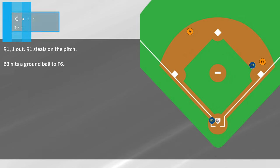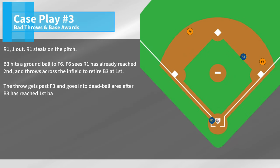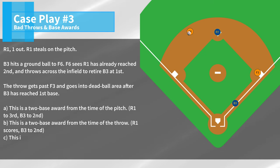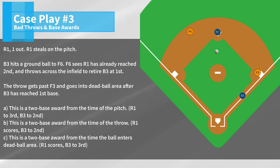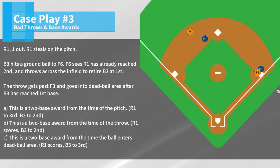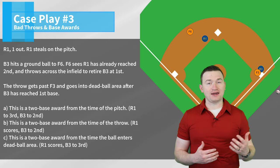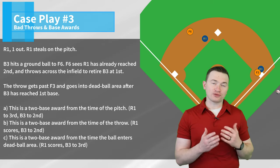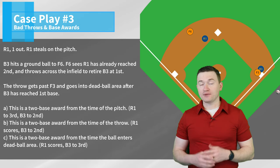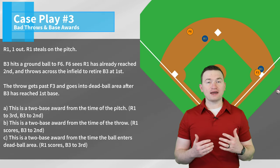Case play number three: R1, one out. R1 steals on the pitch. B3 hits a ground ball to F6. F6 sees R1 has already reached second and throws across the infield to retire B3 at first. That throw gets past F3 and goes into dead ball area after B3 has reached first base. The correct answer is A — this is a two base award from the time of the pitch, R1 to third, B3 to second. Even though R1 has already reached second base at the time of the throw, the batter runner has not yet advanced one base safely. For that reason, the award is two bases from the time of the pitch.